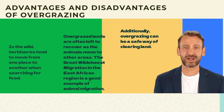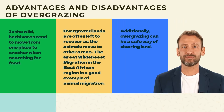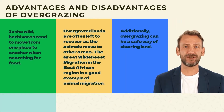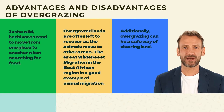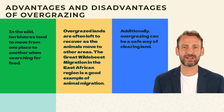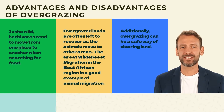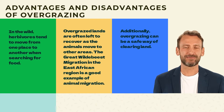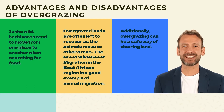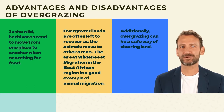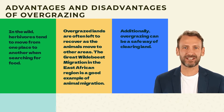In the wild, herbivores tend to move from one place to another when searching for food. Overgrazed lands are often left to recover as the animals move to other areas. The Great Wildebeest Migration in the East African region is a good example of animal migration.